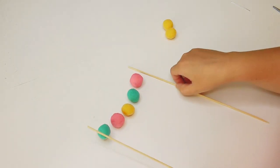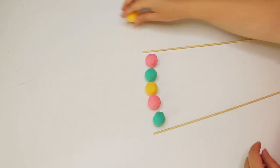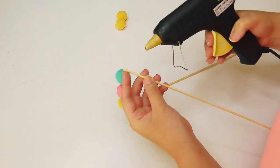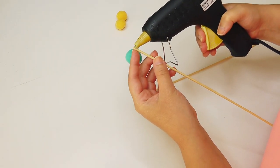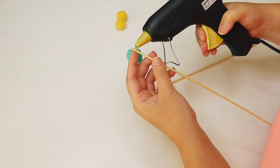Gently push the knots towards the very top of the sticks. Take your hot glue gun and glue over the knots and around the top of the stick, securing it in place.